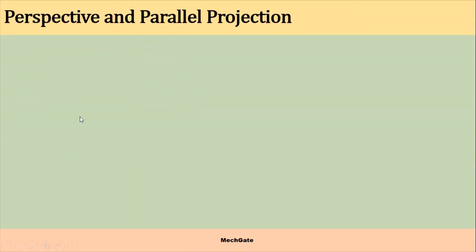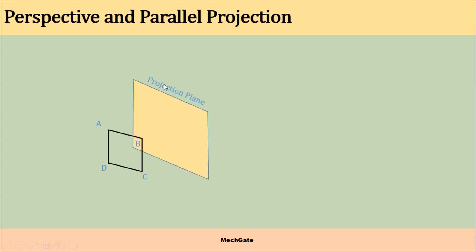Let's understand the difference between perspective and parallel projection. Let's say we have an object ABCD and this is the plane of paper, called the projection plane. In perspective projection, light source or projection lines emerge from a single point, cover the object, and the object is projected onto the projection plane. The size may be larger or smaller than the actual object.